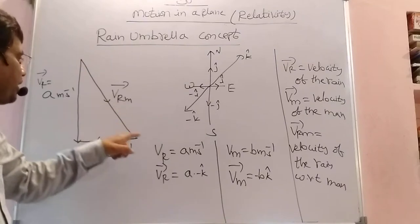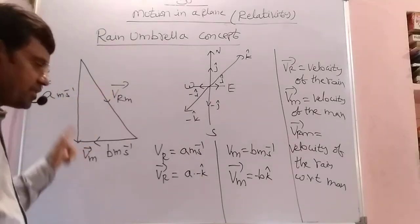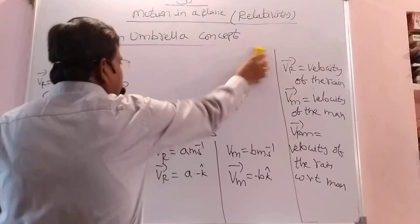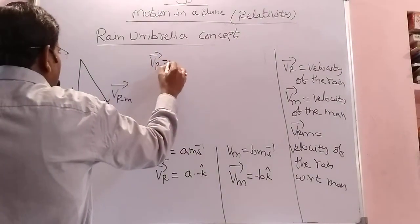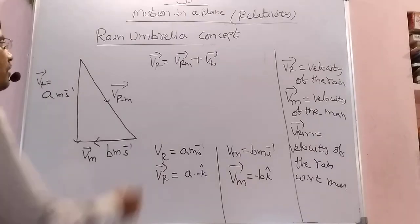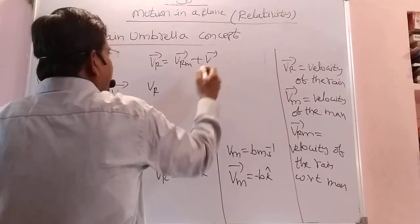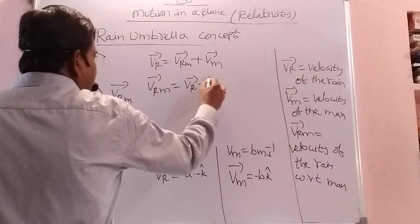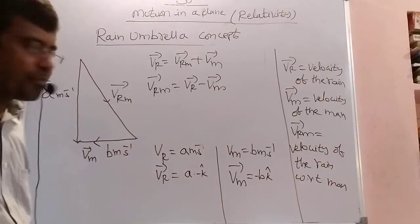From the vector equation Vr equals Vrm plus Vm, we can derive that Vrm equals Vr minus Vm. This is the relative velocity concept. The velocity of the rain with respect to the man equals Vr minus Vm.